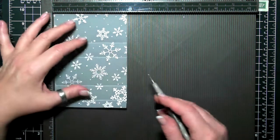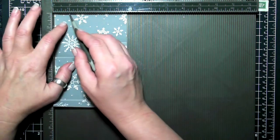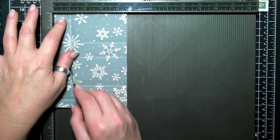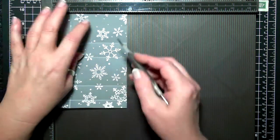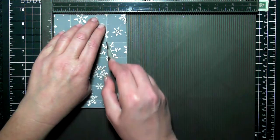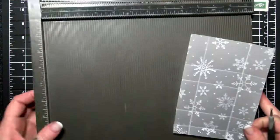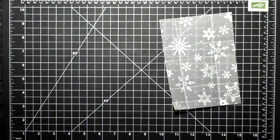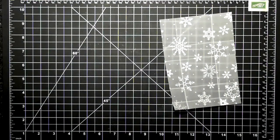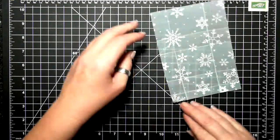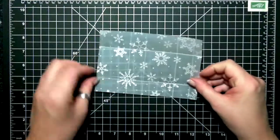Then I'm going to turn it round and we're going to score at 1 inch and 3.25 inches. I was very gentle when I scored that.